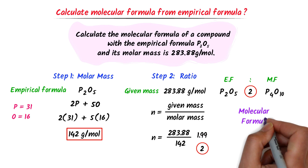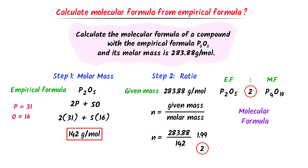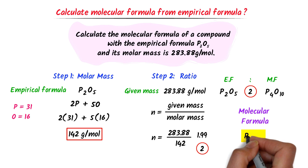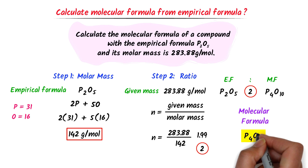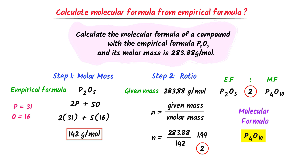Thus the molecular formula of P2O5 is P4O10. Remember these two easy steps through which we can easily calculate molecular formula from empirical formula.